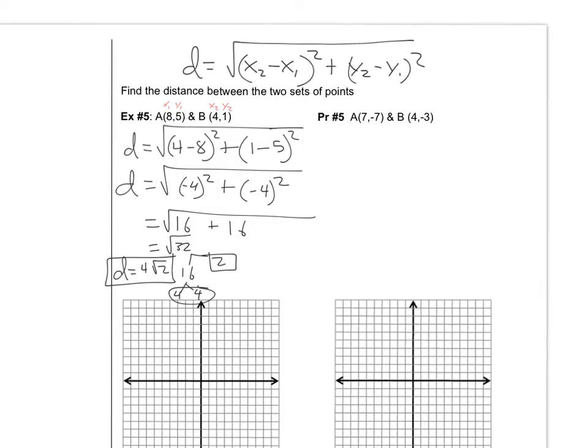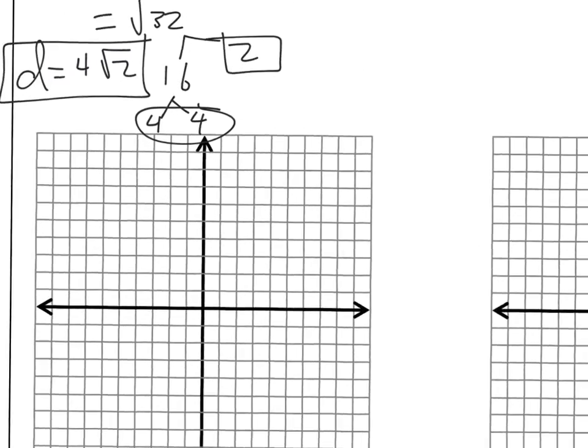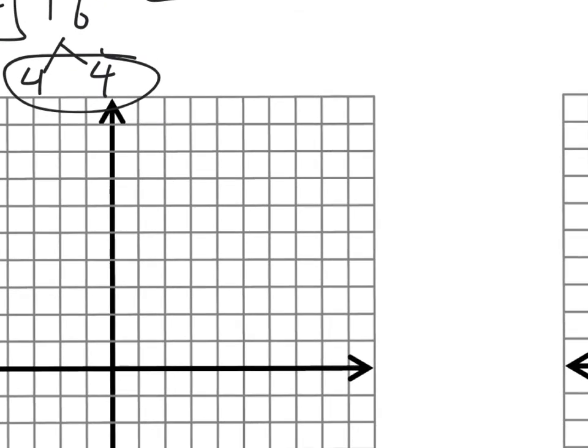So let's just plot these points. Let's plot 8, 5 first, that's A. So 8, 5, 4, 8, 1, 2, 3, so there's A, pretty sure that's 8, 5, yeah, 8, 5.